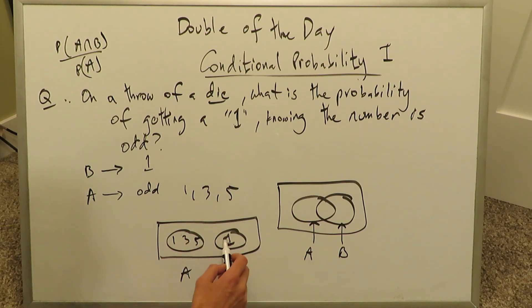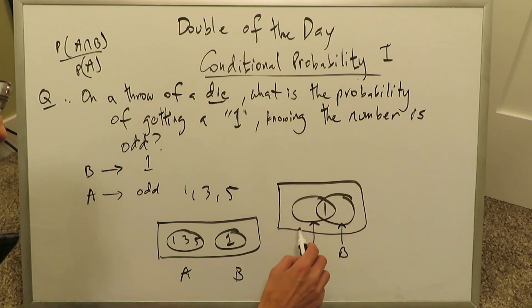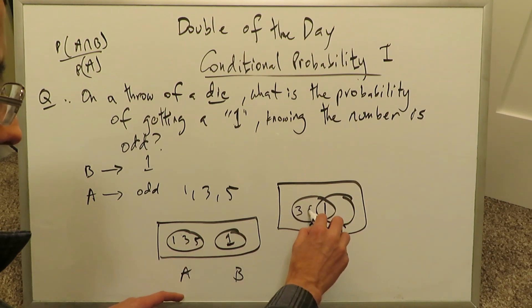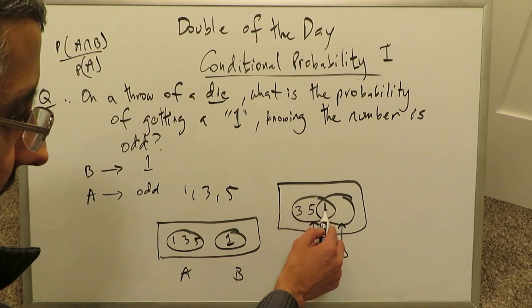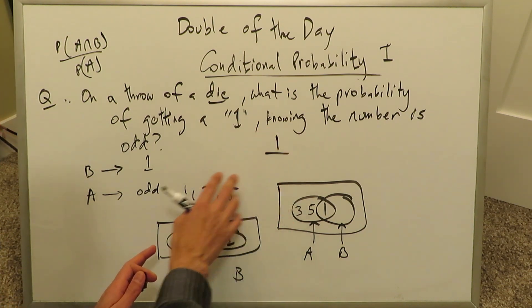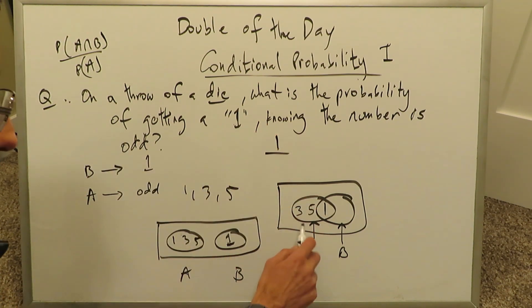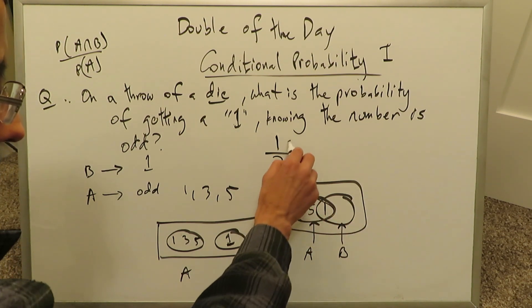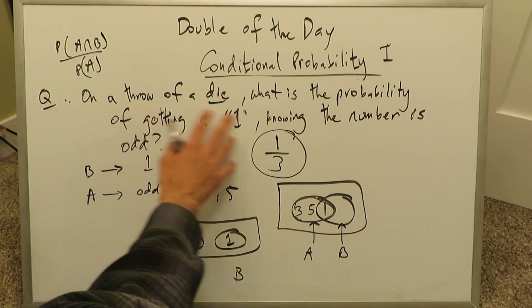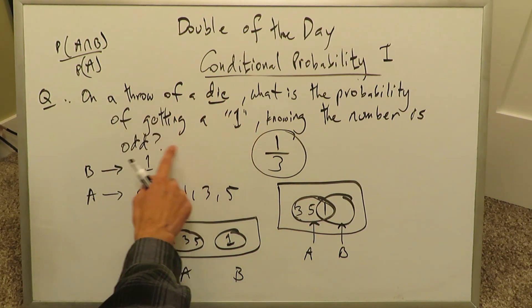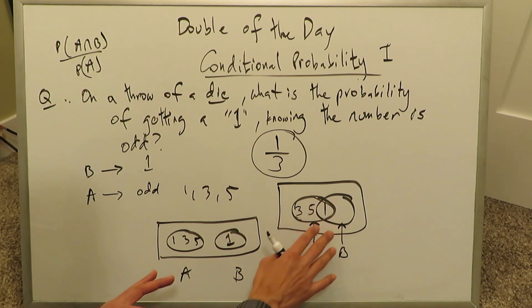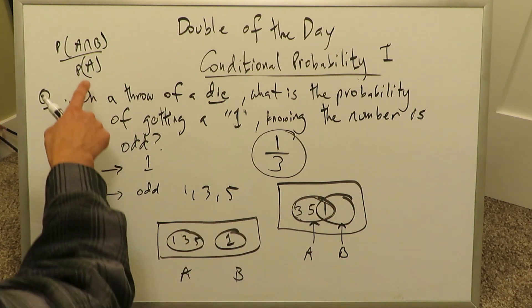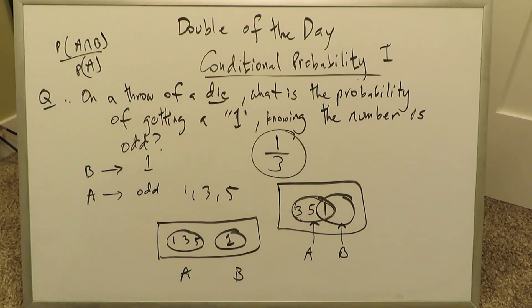A has 1, 3, and 5. B has 1. Since 1 is found in both sets, it goes in the intersection, while A also has 3 and 5. Applying the formula: probability of A and B — a single item in the intersection — divided by probability of A — 3 numbers in the A bubble — gives 1 over 3. The probability of getting a 1 on a single throw knowing the number is odd is 1 out of 3.